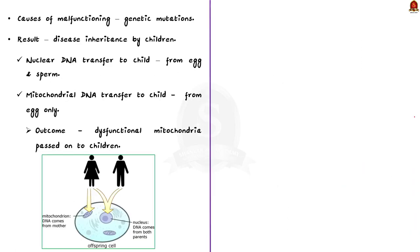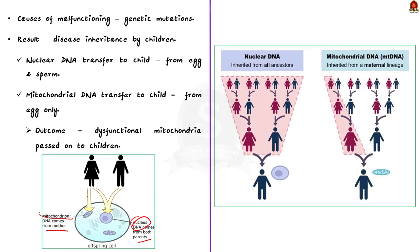Our nuclear DNA comes from both egg and sperm, but mitochondrial DNA is largely passed on from the mother through her egg. Mitochondrial DNA is the gene containing information necessary for mitochondria to function. If a woman has dysfunctional mitochondria in her egg, she will pass on these disease-causing mitochondria to all of her children. The severity of the disease varies depending on the ratio of healthy versus diseased mitochondria in the mother's egg. So mothers with mitochondrial disease are nowadays opting for MDT.